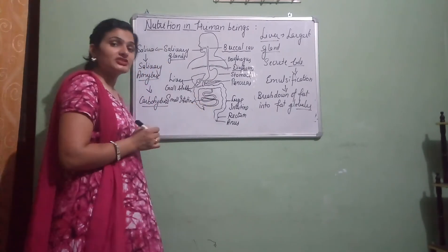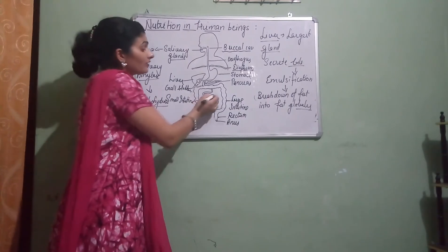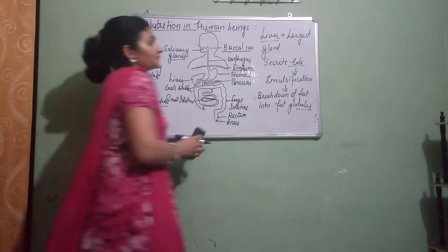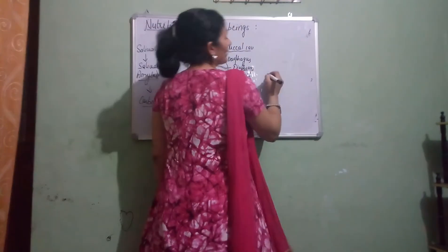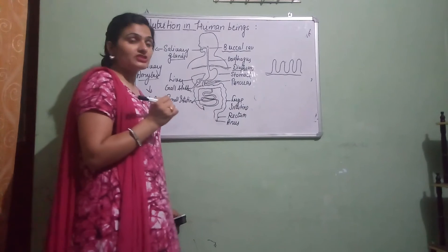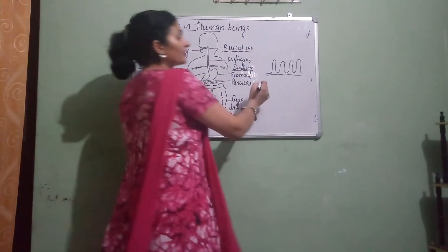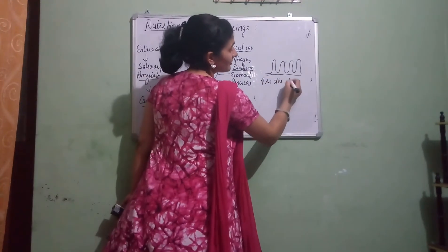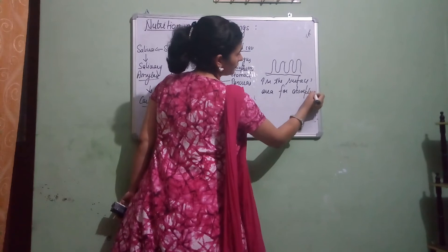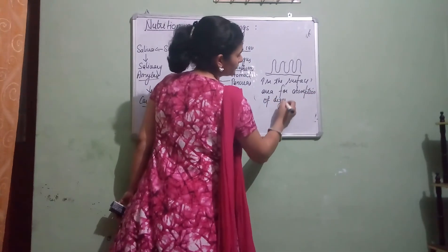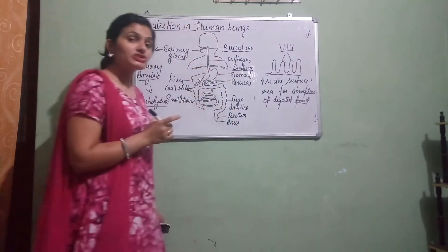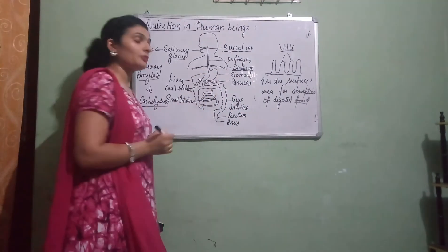The whole process of digestion is completed in the small intestine. Then comes absorption. Absorption takes place with the help of villi — finger-like projections present in the wall of the small intestine. These increase the surface area for absorption of digested food.